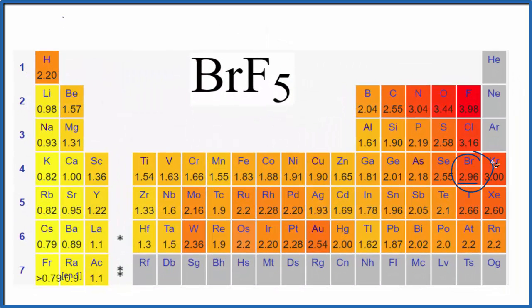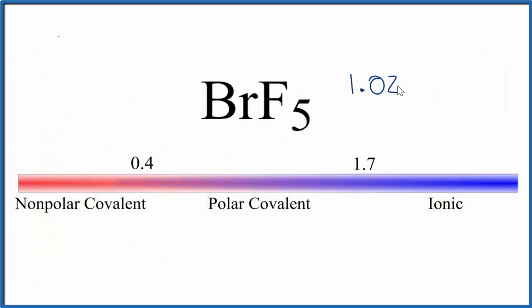Here's bromine, 2.96. Here's fluorine, 3.98. So 3.98 minus 2.96, that's a difference of 1.02—that's the difference in electronegativity between the bromine and the fluorine. Let's see what that means. On our scale here, 1.02 would